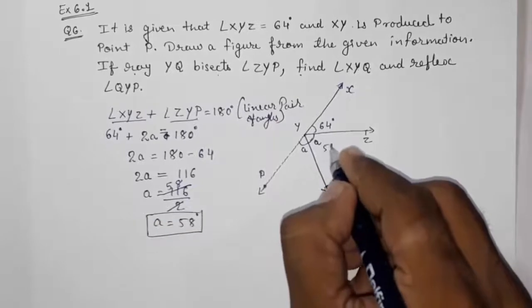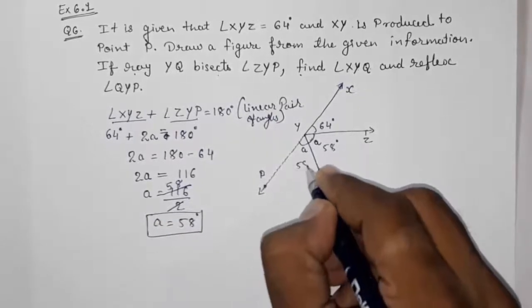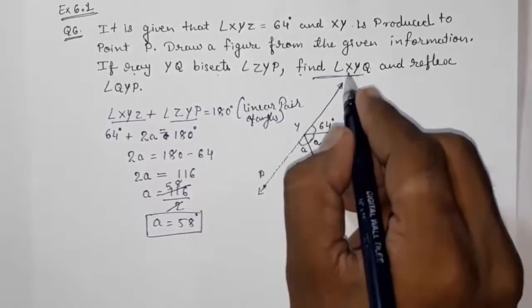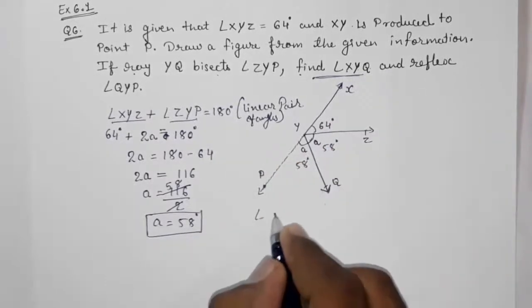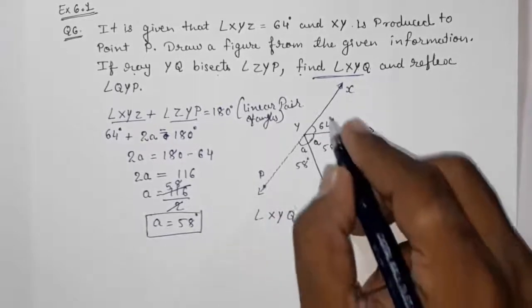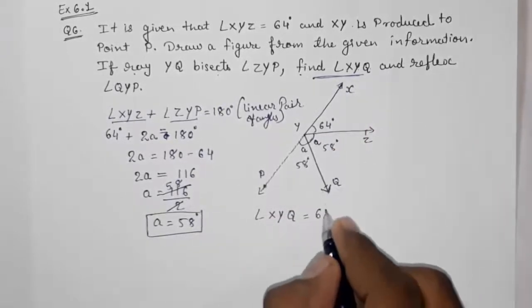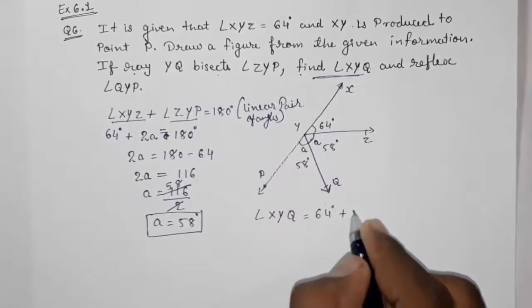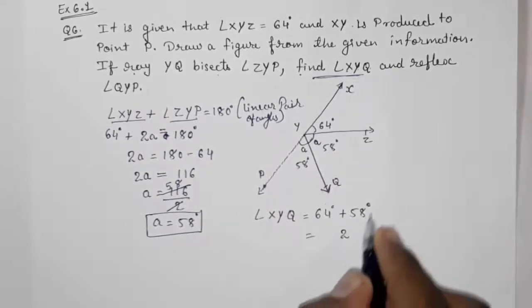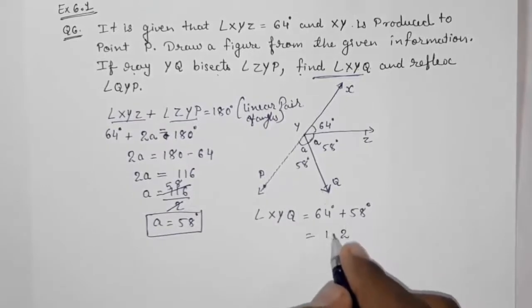So these two angles will be 58 degrees and this will be also 58 degrees. Now what they told us to find out - find out angle XYQ. So angle XYQ, that is XYQ, sum of these two will be 64 plus 58 degrees, that is 122 degrees.